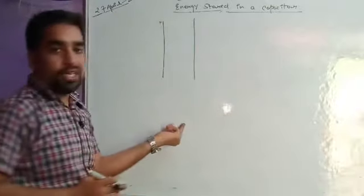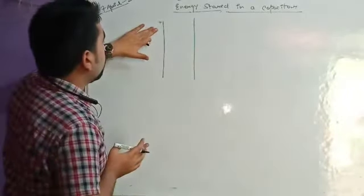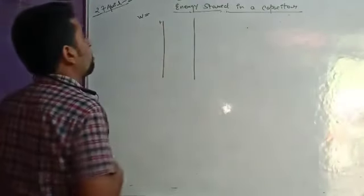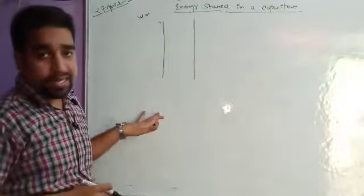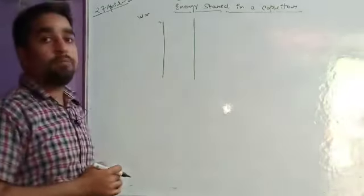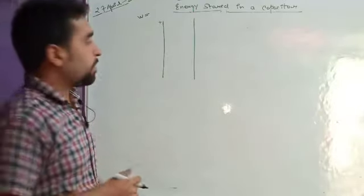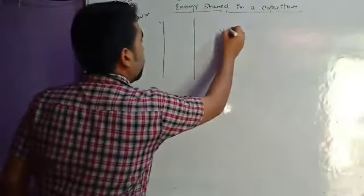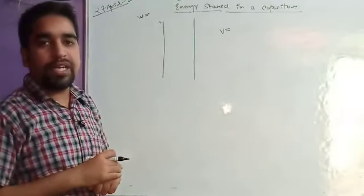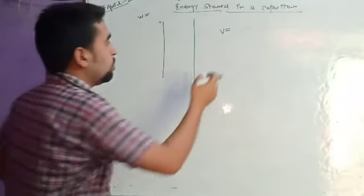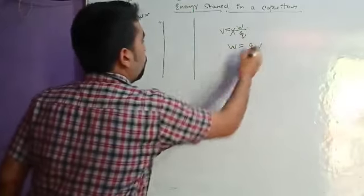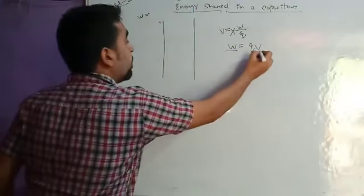So when we store the first charge, what is the work done? In electrostatics, whenever we calculate work, we should be aware of potential difference. We have studied that electric potential is the amount of work done to bring a unit positive charge from infinity to a certain point. So V is equal to W upon Q, which means W is equal to QV.